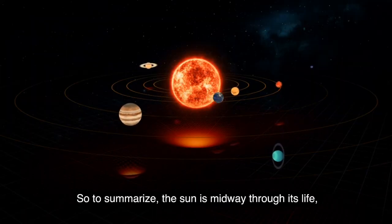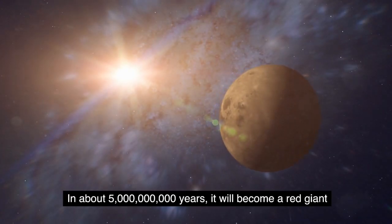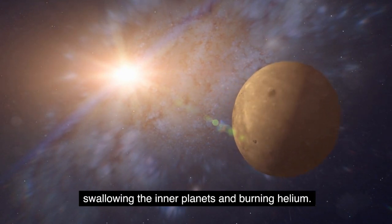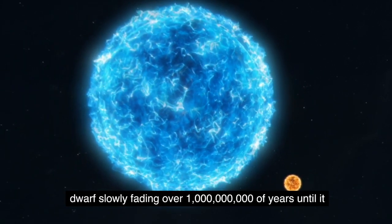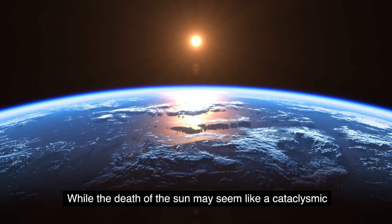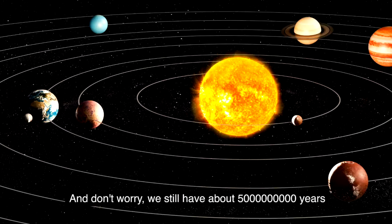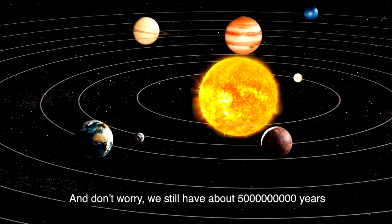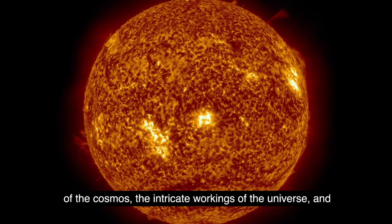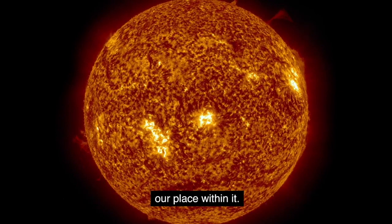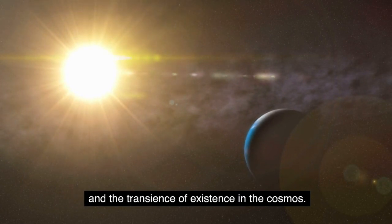So to summarize, the sun is midway through its life, burning hydrogen to produce helium. In about 5 billion years it will become a red giant, swallowing the inner planets and burning helium. After that, it will shed its outer layers and become a white dwarf, slowly fading over billions of years until it becomes a black dwarf. While the death of the sun may seem like a cataclysmic event, it's just part of the life cycle of stars. And don't worry, we still have about 5 billion years of sunshine left. The sun's eventual demise is a reminder of the grandeur of the cosmos, the intricate workings of the universe, and our place within it. It's a fascinating journey, one that highlights the beauty and the transience of existence in the cosmos.